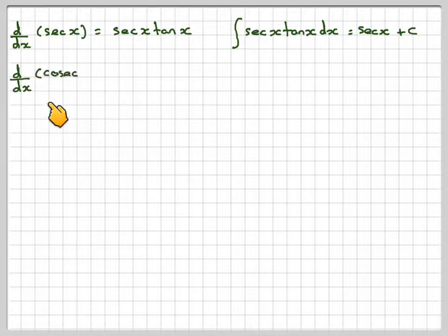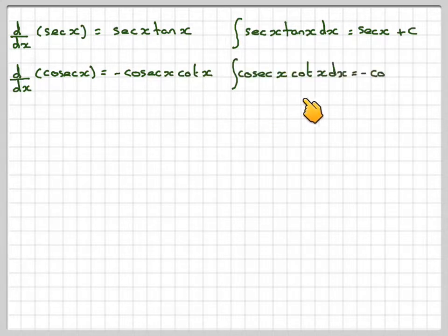And then d/dx of cosec(x) is equal to -cosec(x)cot(x). And therefore, if you integrate cosec(x)cot(x), you're going to get -cosec(x) + c.